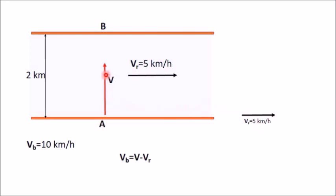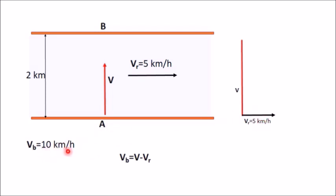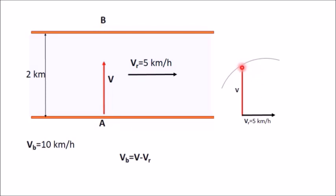Draw V from the start point of VR, but since you don't know the magnitude of V, draw it any length. Then from the end point of V, draw an arc of length 10 km per hour using your scale — this represents VB. Where the arc intersects gives the final point of V. Join these two points to get VB, which represents V minus VR equals 10 km per hour.